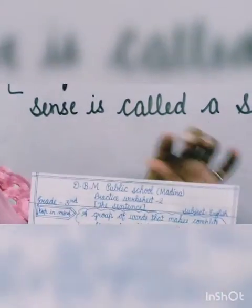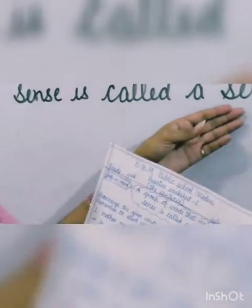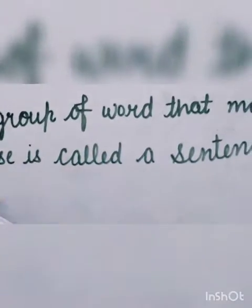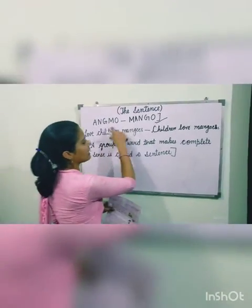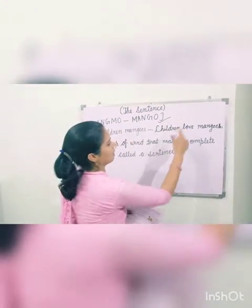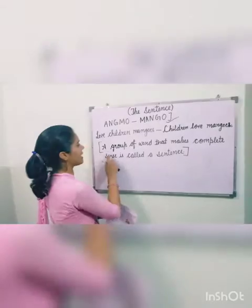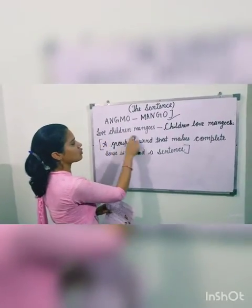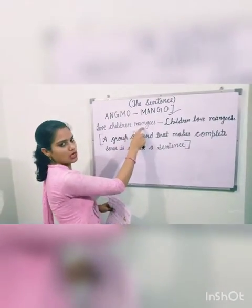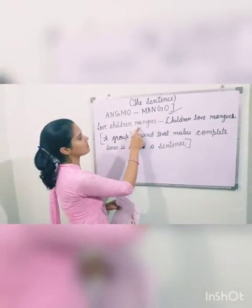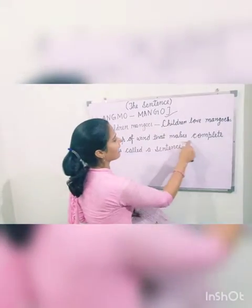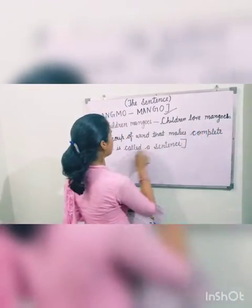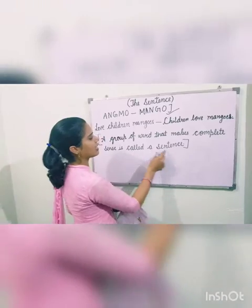Yeh aapki worksheet mein diya hua hai, sab se upar. Yeh hai definition — sentence kya hotta hai? A group of words. Yeh jo aapke words diye hue hai, inka group that makes complete sense. Love, children, mangoes — but that does not give complete sense. A group of words that makes complete sense is called a sentence.